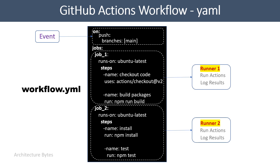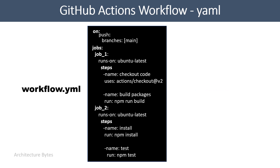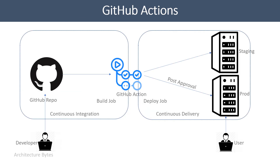It's important to remember that jobs can run in parallel, while steps within a job always run in a sequence. However, you can create a dependency between jobs to run them in a certain sequence, and you can create complex workflows in this fashion. That was a quick introduction to GitHub Actions.